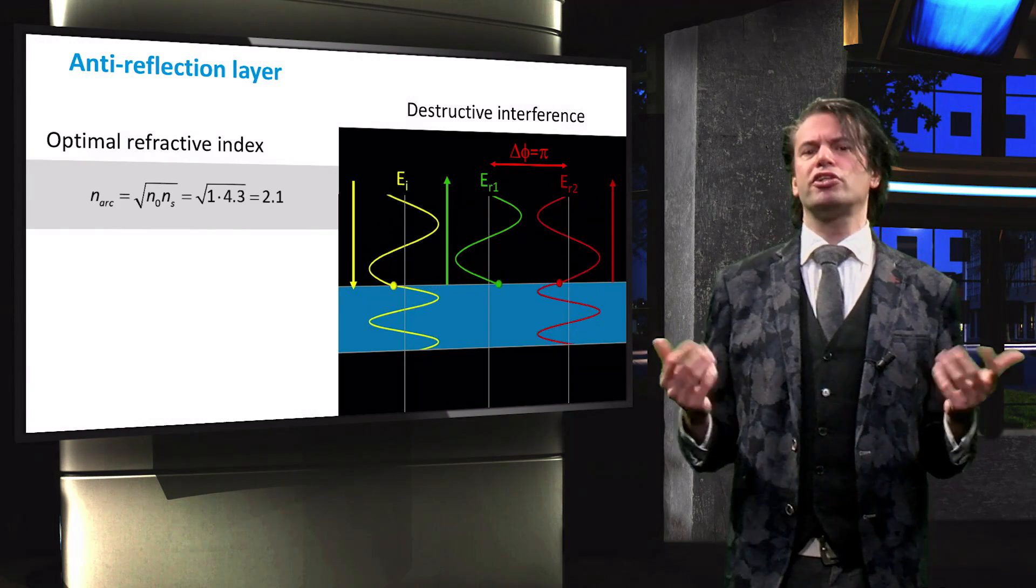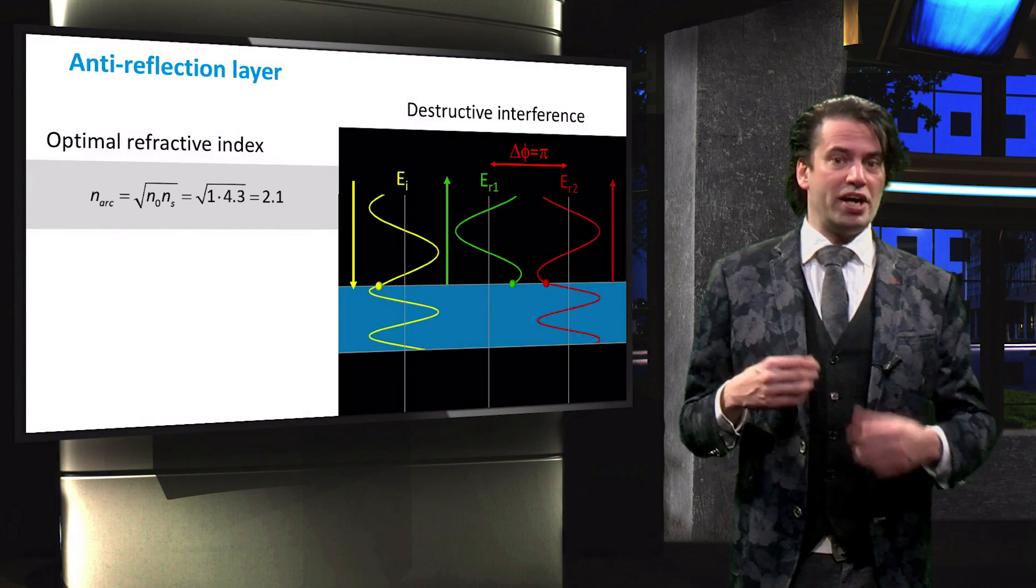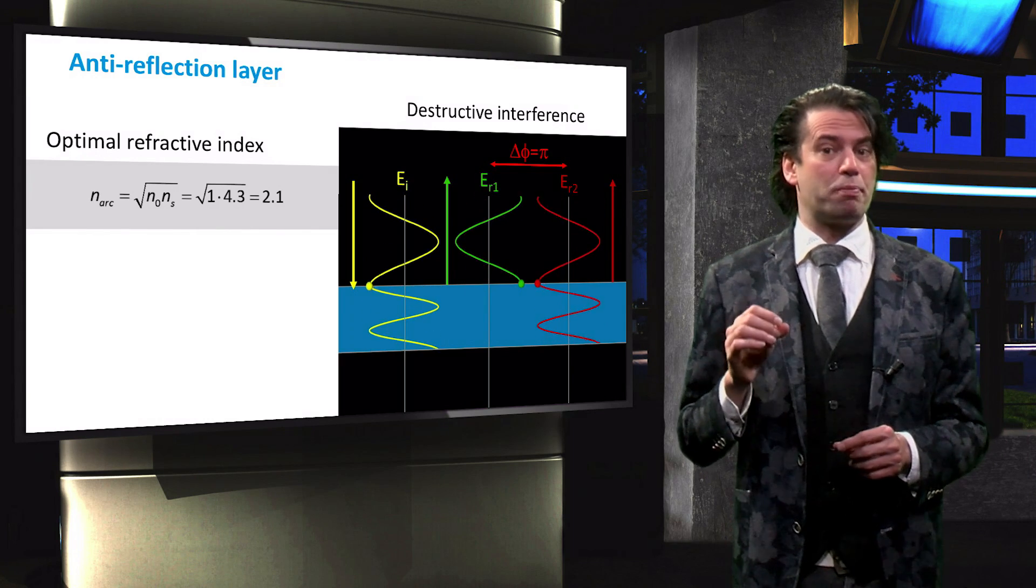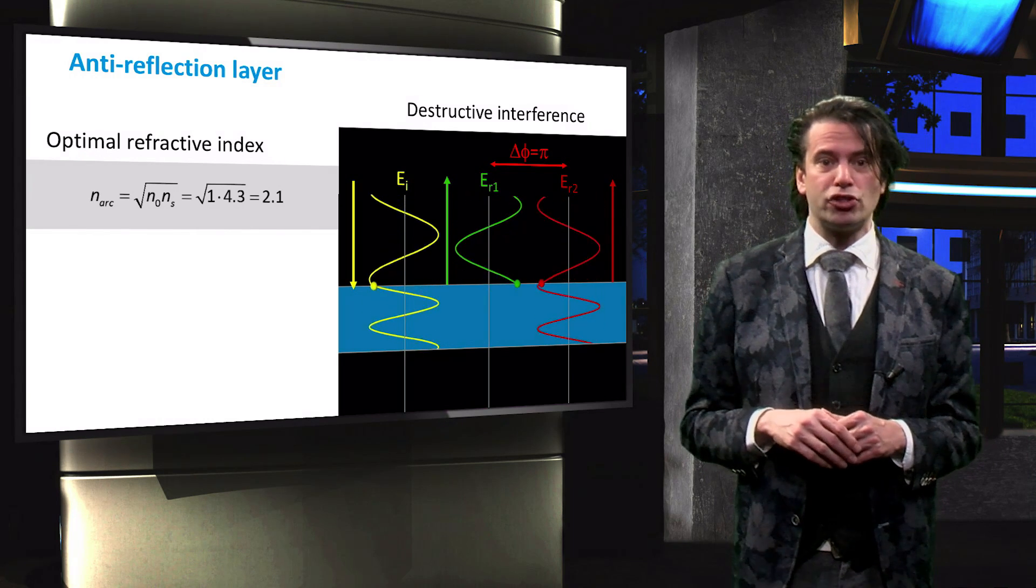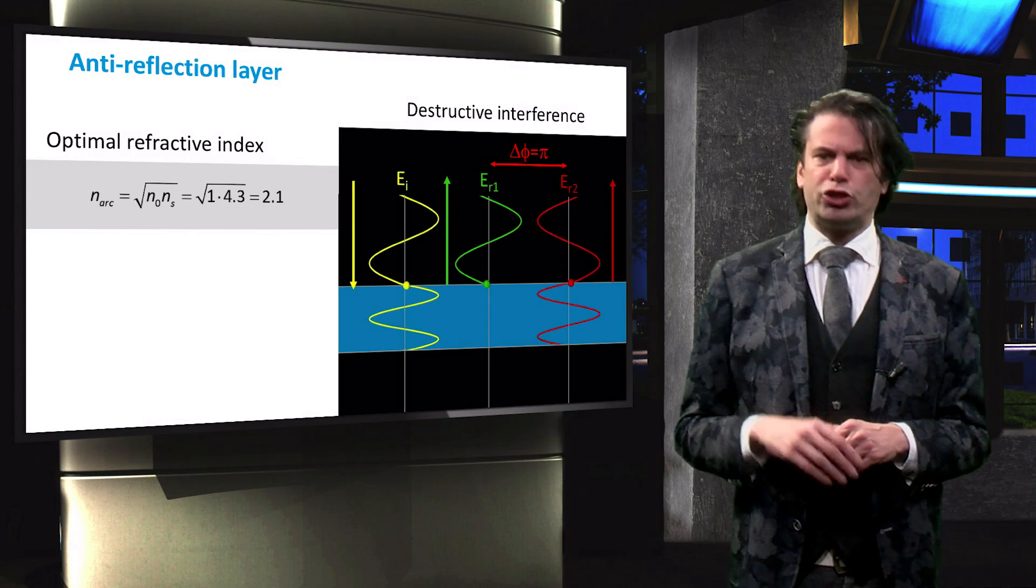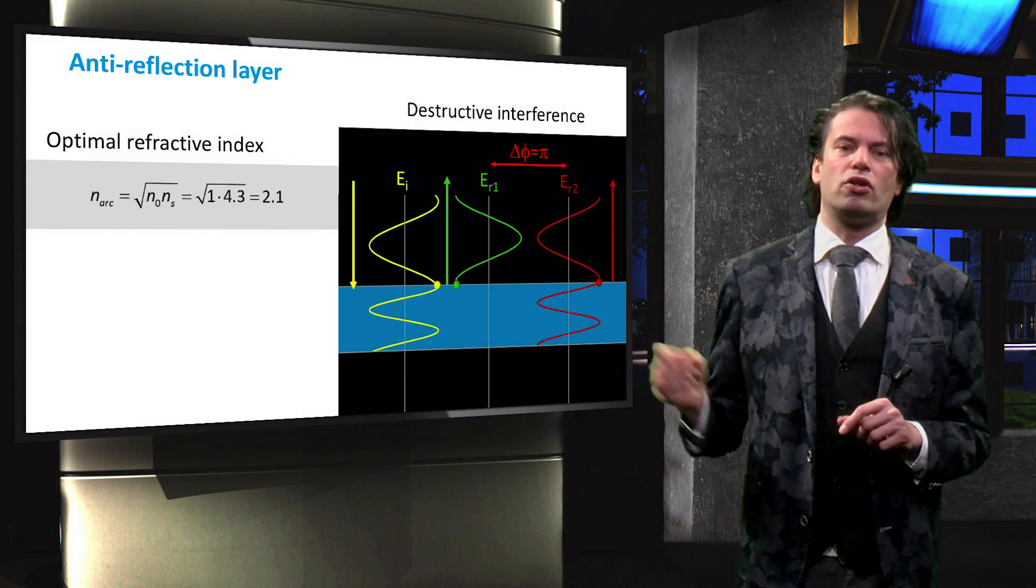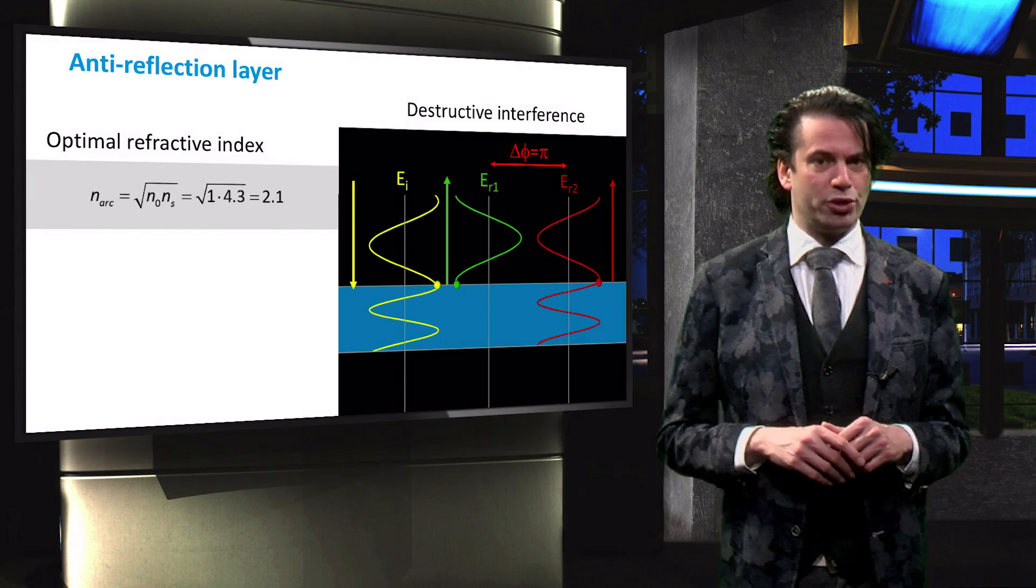As we discussed in the section of the Fresnel equations, the optimal refractive index for a Rayleigh film equals the geometric mean of the refractive indices of the encompassing media. Assuming the encompassing media are air and silicon, the optimal refractive index is around 2.1.